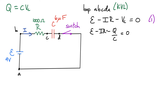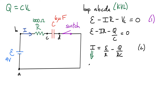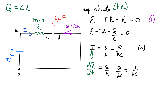Next I want to isolate the current. Bring the Q/C term to the other side and divide through by the resistance, giving: I = EMF/R minus Q/(RC). Now I introduce the definition of current: I = dQ/dt, the rate of change of charge with respect to time. So dQ/dt = EMF/R minus Q/(RC). This is a really important equation — make sure you get this one.